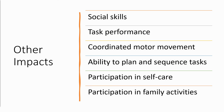Other impacts you may notice from dysfunction in the sensory systems include deficits in social skills, task performance, coordinated motor movement, ability to plan and sequence tasks, ability to participate in self-care, and decreased participation in family activities — all of which relate back to that pyramid of learning we looked at.